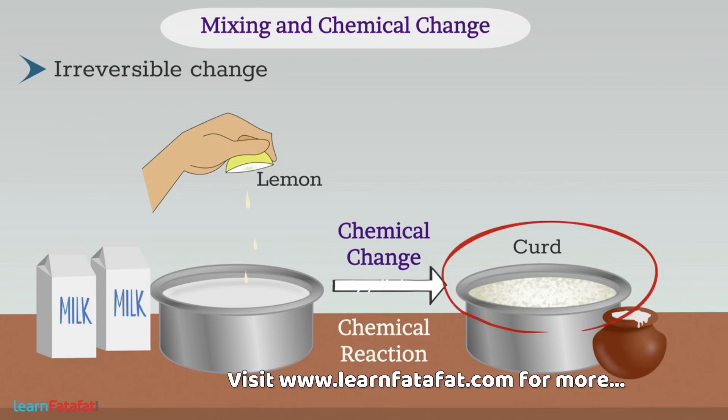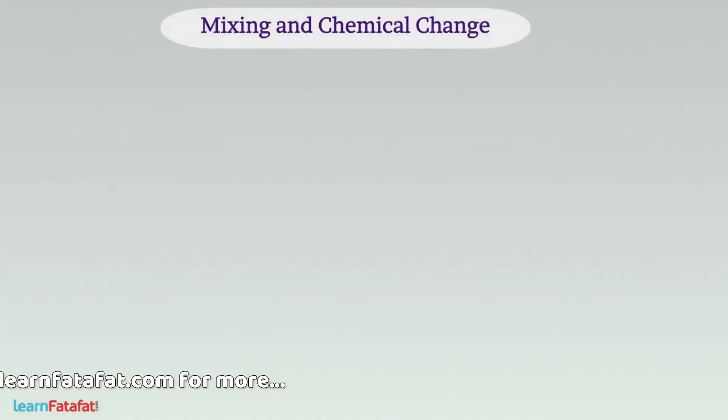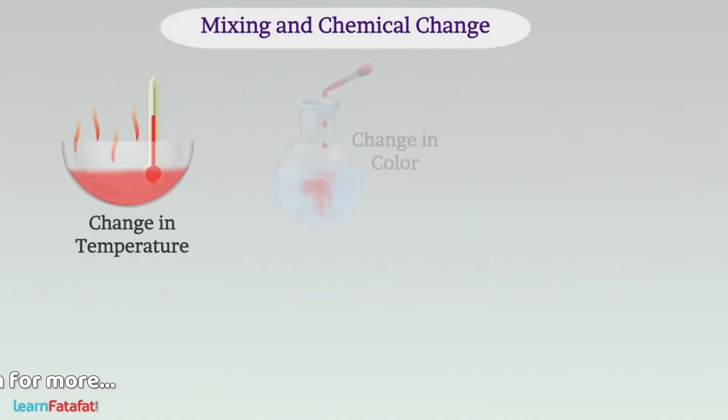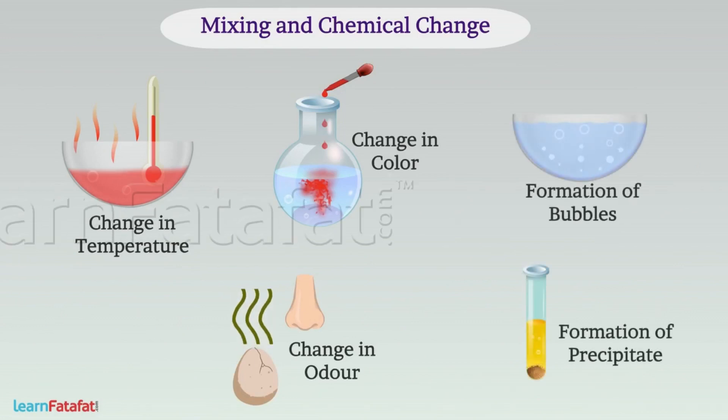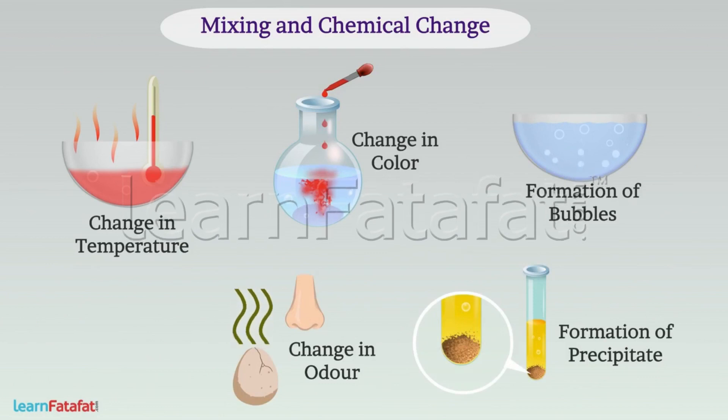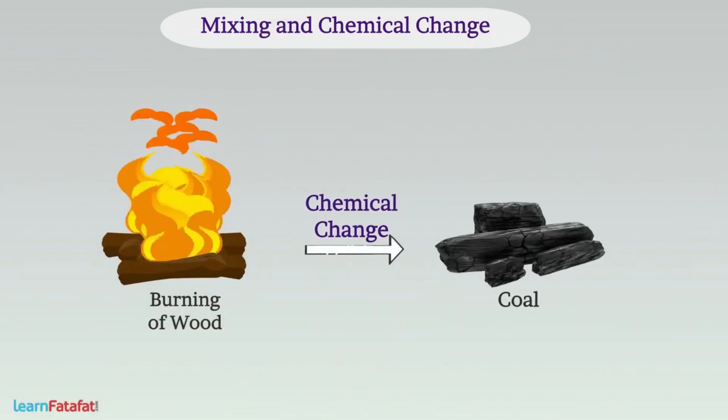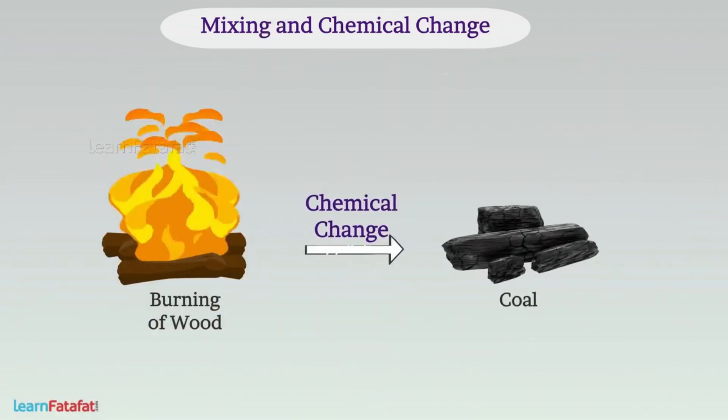which have their own properties. Basically, a chemical change causes change in temperature, color, odor, formation of bubbles, formation of precipitate—that is, solid material which settles at the bottom of liquid mixture. In general, it causes formation of different products with properties different from properties of substances which are mixed.